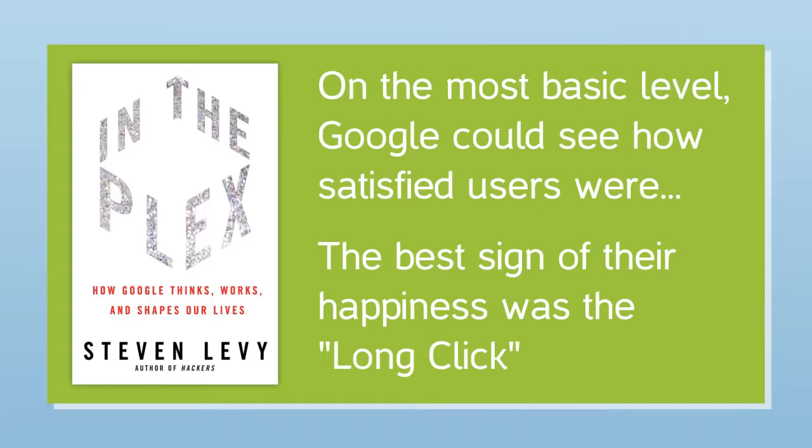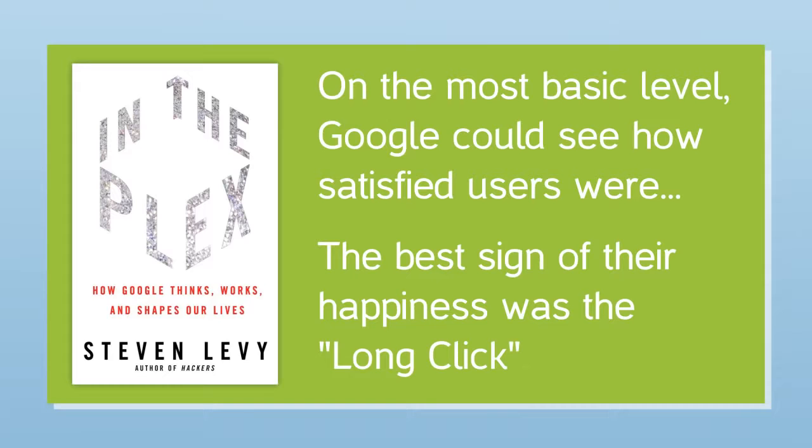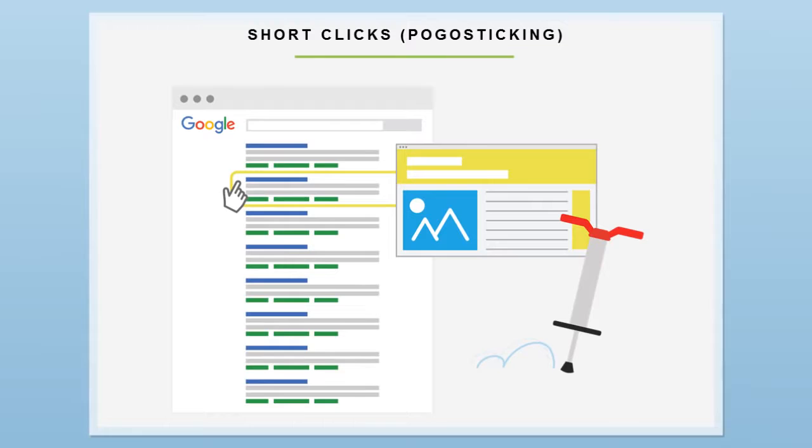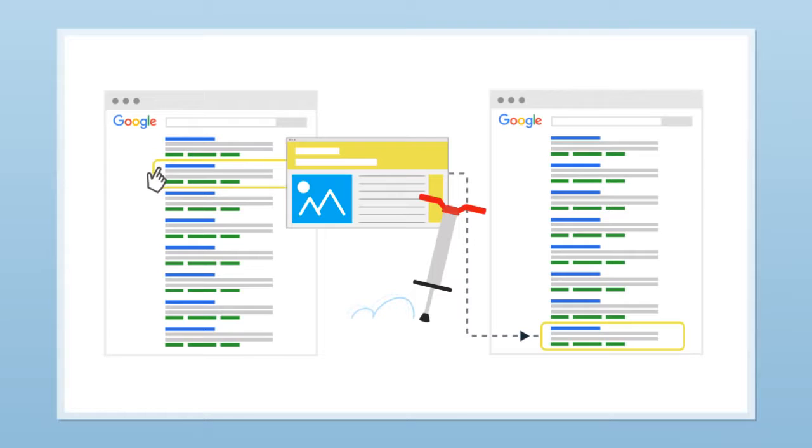The best sign of their happiness was the long click. In other words, when people click on your site in Google and stick around, it sends a very strong message that your page makes searchers happy. But when people quickly leave your site like they're on a pogo stick, it tells Google the opposite. It shows them that your page isn't a good fit for that keyword.